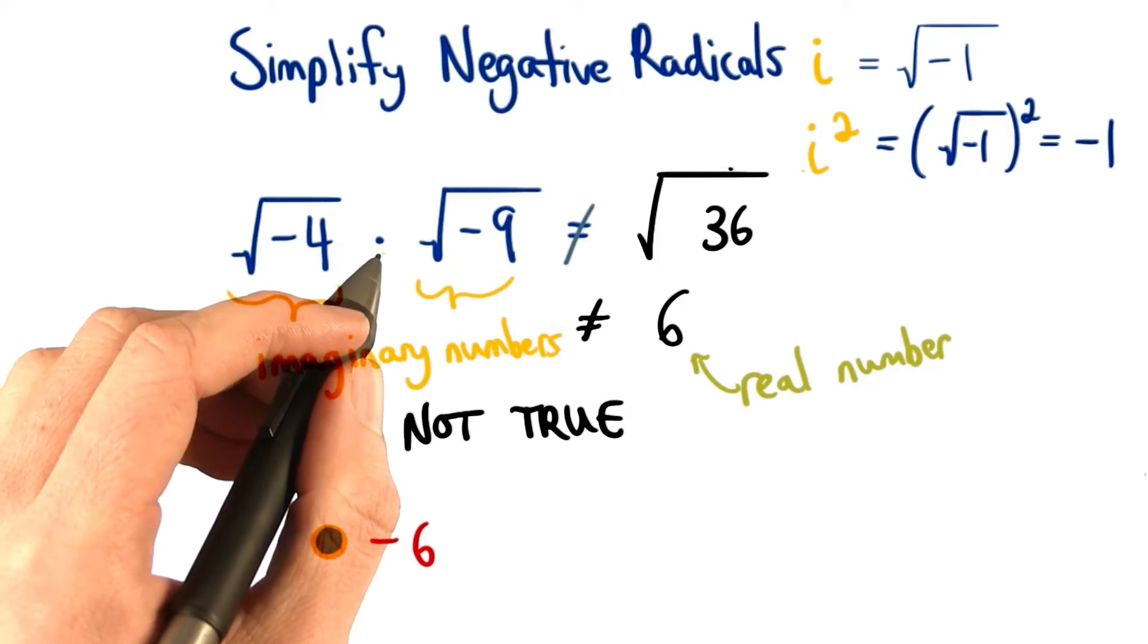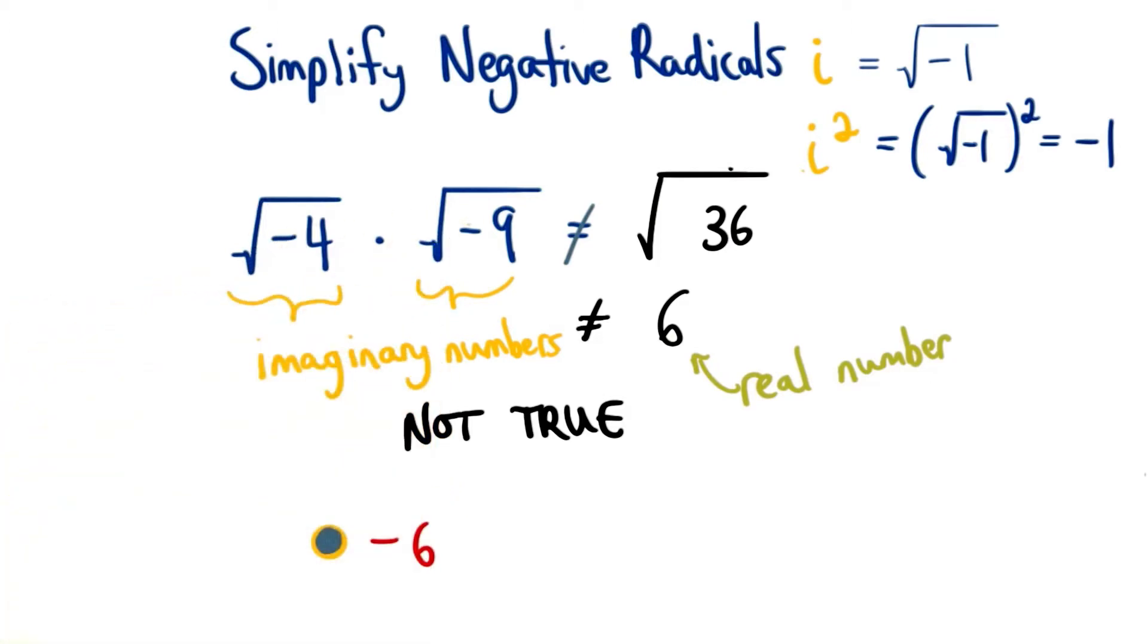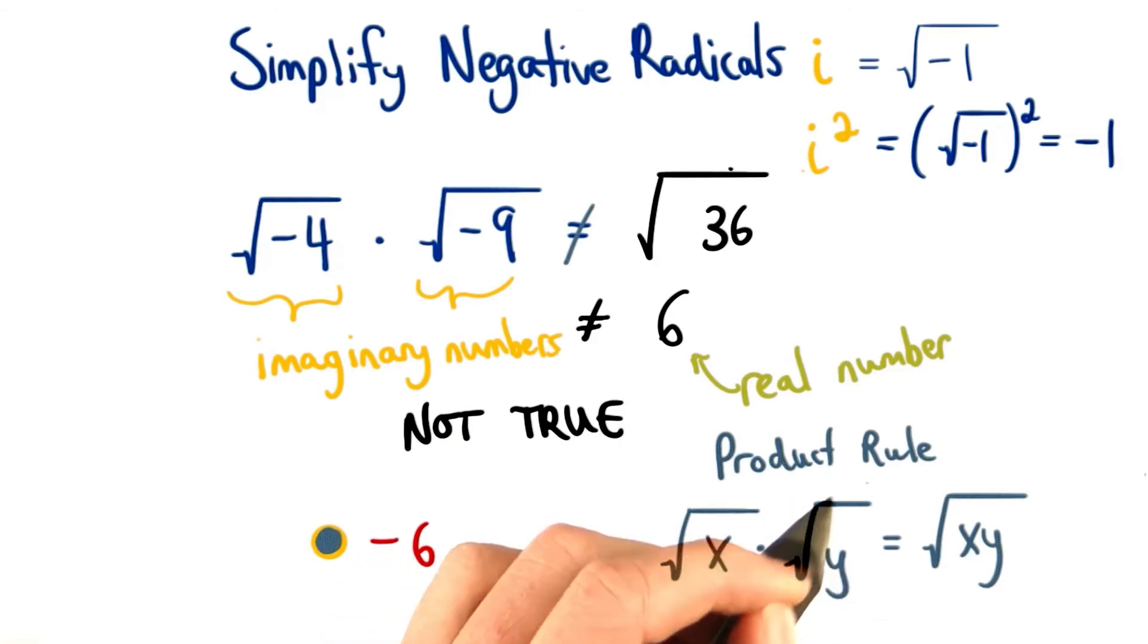The product rule does not hold for imaginary numbers. It only holds for real numbers. This was our product rule, and before x and y had to be greater than 0. That was so that way these radicals were real numbers, rather than imaginary numbers.